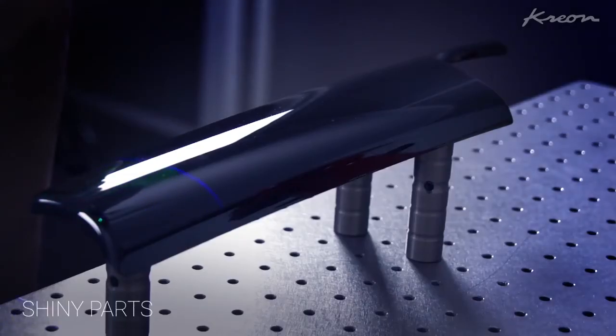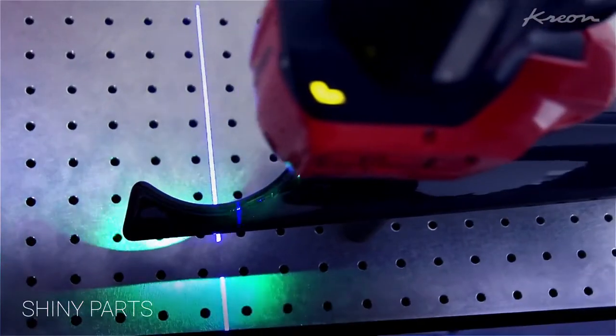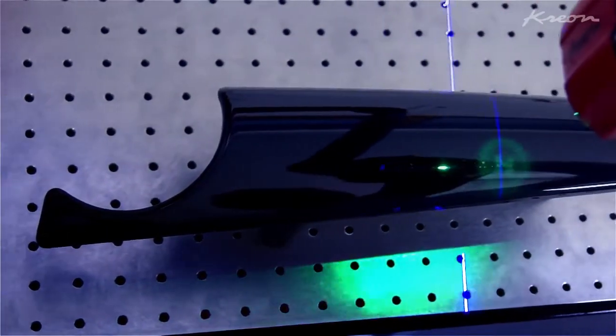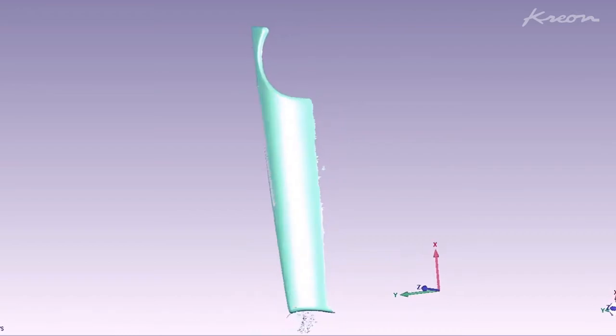Scanning has never been so efficient, even for shiny surfaces like black glossy and metal parts. In addition, with the Skyline, no surface preparation and no targets are needed.